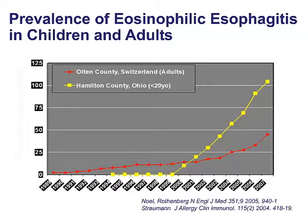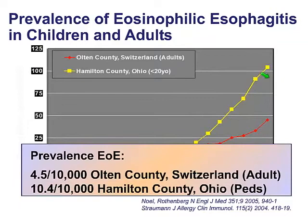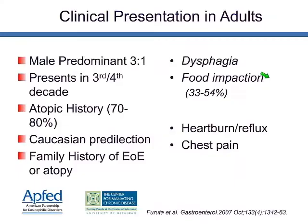When we talk about epidemiology — how common this is — we've seen over the last several years that the prevalence of eosinophilic esophagitis has been rising in both adults and children. We see rising numbers of new patients in Olten County, Switzerland, and Hamilton County, Ohio, with a prevalence of 4.5 out of 10,000 adults and 10.4 out of 10,000 children. This is actually becoming more common than diseases like inflammatory bowel disease, ulcerative colitis, and Crohn's disease.